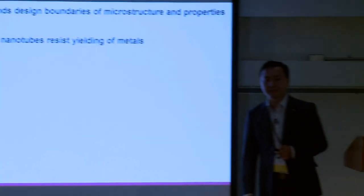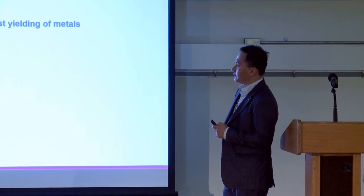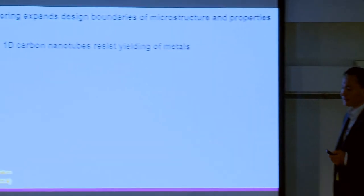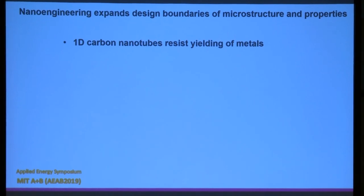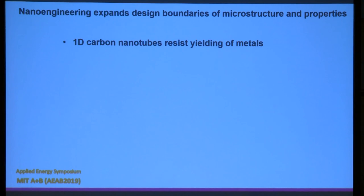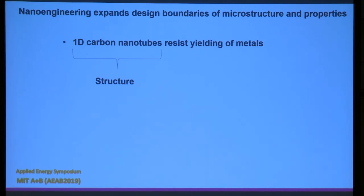Materials are very critical for all of society, especially regarding energy — covering energy generation, energy saving, and transportation sectors. Properties of materials have a strong relationship with microstructure. The approach here uses nano engineering to expand the design parameter space of microstructure and properties, filling the logic gap in the statement: one-dimensional carbon nanotubes resist yielding of metals.